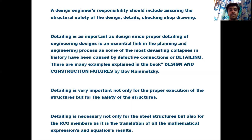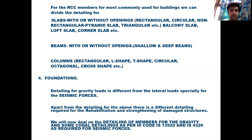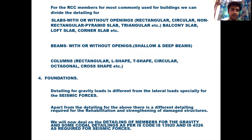Detailing is the translation of all mathematical expressions and equation results into physical form, so it is very important for RCC members. Commonly used members include slabs with and without openings, balcony slabs, loft slabs, corner slabs, beams with or without openings, shallow and deep beams, and columns — rectangular, circular, and octagonal. Foundation detailing for gravity loads differs from lateral loads, especially seismic forces. Additionally, a different kind of detailing is required for rehabilitation and strengthening of old structures.